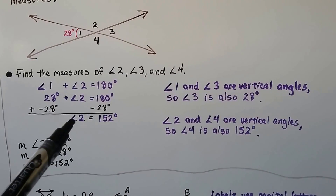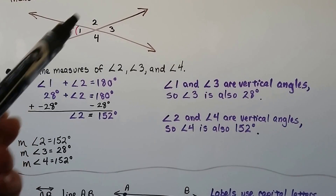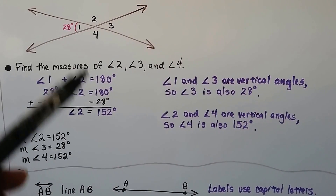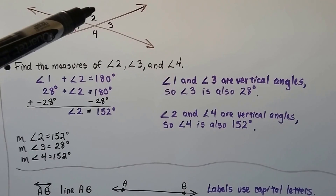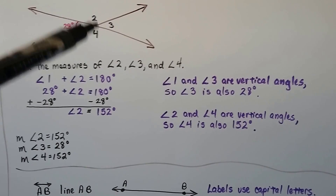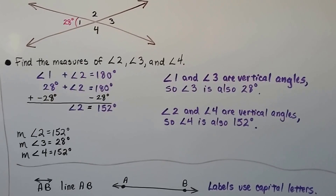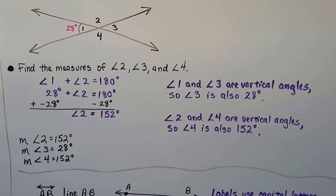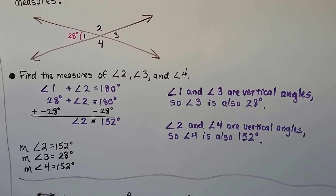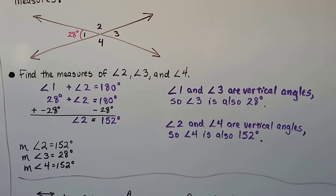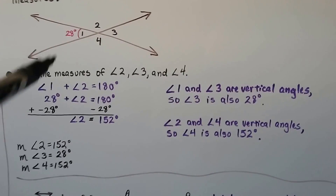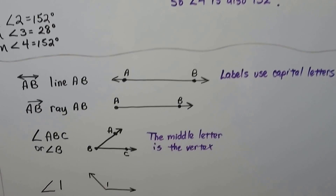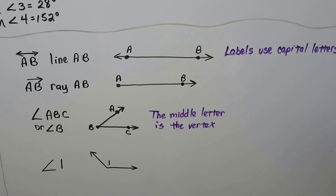We already found that angle two was 152 degrees. If that's 152 degrees and angle four and angle two are vertical angles, then angle four has to be 152 degrees. So we just used some logic and common sense and slowly figured out all angles from that one angle, knowing the rule that they have to be 180 degrees for both of them to form a straight line.